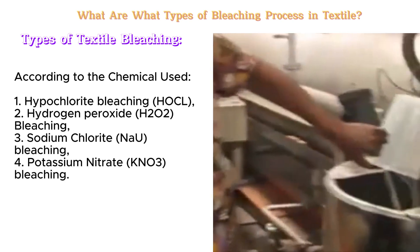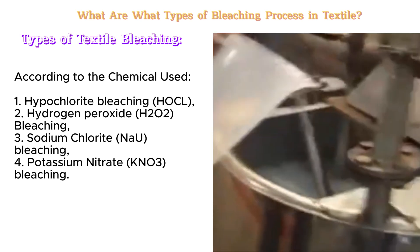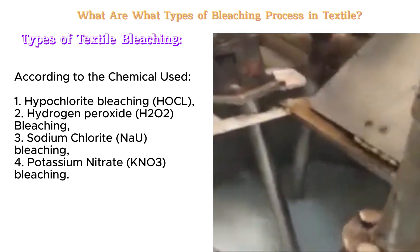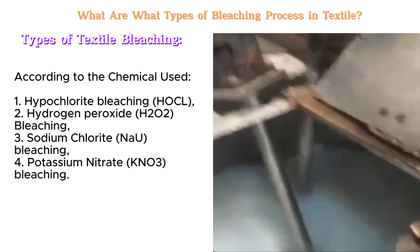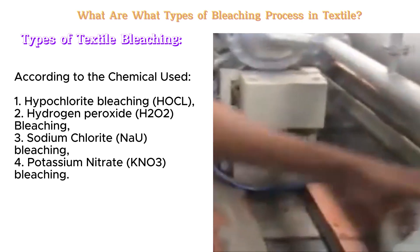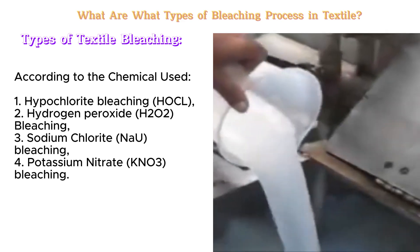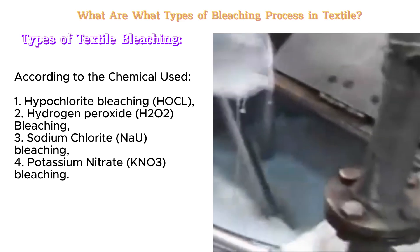According to the chemical used: hypochlorite bleaching (HOCl), hydrogen peroxide (H₂O₂) bleaching, sodium chlorite bleaching, and potassium permanganate bleaching.